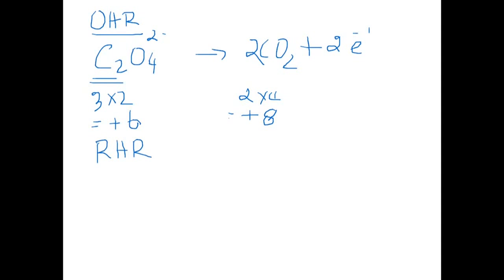Reduction half reaction, MnO4^- gives you Mn^2+, here it's plus 7 changing to plus 2. For this change to happen, we have to add 5 moles of electrons.